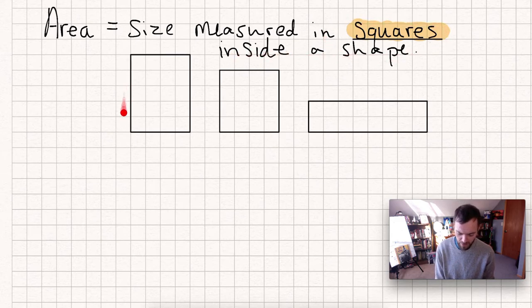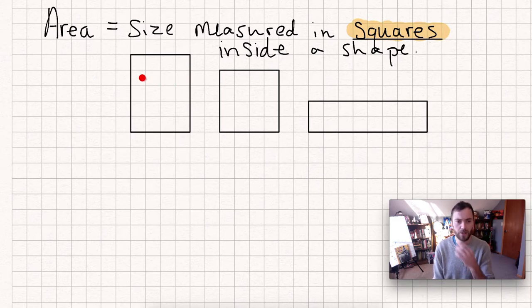So here we have some rectangles and I can count how many squares fit inside. I can count one, two, three, four, five, six, seven, eight, nine, ten, eleven, twelve, thirteen, fourteen, fifteen, sixteen, seventeen, eighteen, nineteen, twenty.